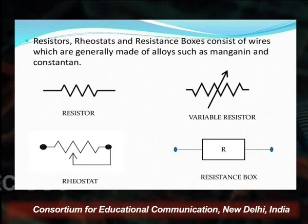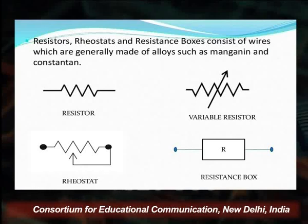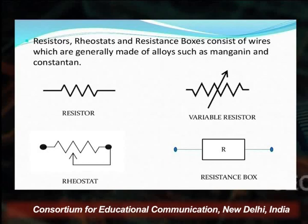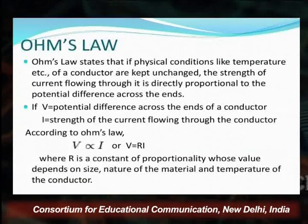Here you can see there are various types of resistors. On the right-hand side, there is an arrow between the resistor symbol, indicating a variable resistor. The third type is a rheostat — its symbol has an arrow pointing toward the resistor. The fourth type is the resistance box, represented by R, where we have various values of resistance that can be used accordingly in the system.